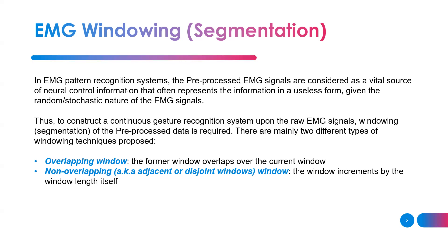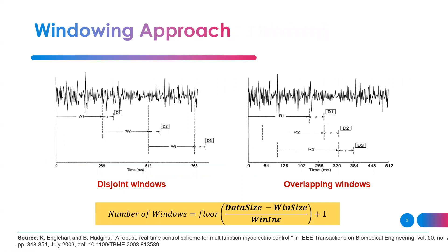Typically, with EMG pattern recognition systems, we use a windowing scheme to look at small segments of the EMG signal, extract features from these segments, and submit them to the classifier. There are two kinds of windowing techniques: overlapping windows, where the previous window overlaps with the current window, and non-overlapping or disjoint windows, where the windows are separate from each other and the increment equals the window analysis length itself.